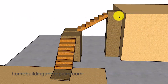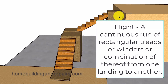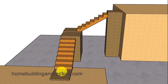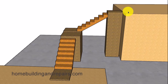Next, let's look at the word flight. The definition is a continuous run of rectangular treads or winders or a combination thereof from one landing to another. Meaning a flight of stairs runs from one landing or floor to the next landing — suggesting the flight of stairs would be right here. All risers and treads would need to be the same from one landing to the next. However, it might not need to match at the landing transitions themselves.